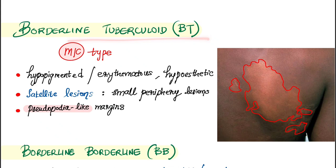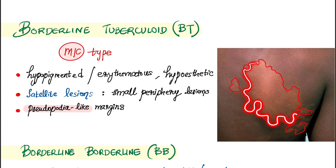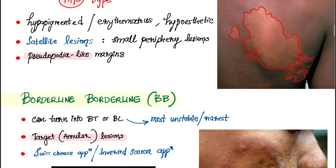Next is borderline tuberculoid (BT), which is the most common type. Hypopigmented erythematous hypoesthetic lesions are seen with satellite lesions and pseudopodia-like margins. Satellite lesions are small peripheral lesions seen around the main lesion.